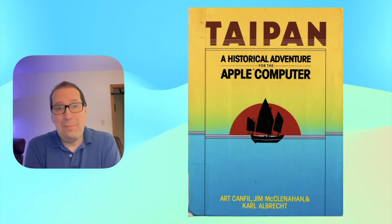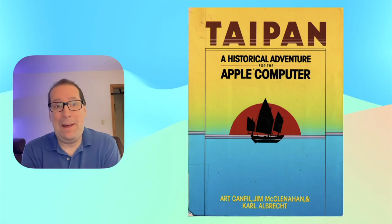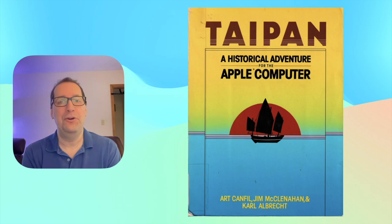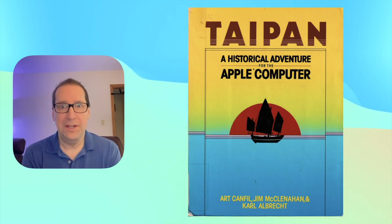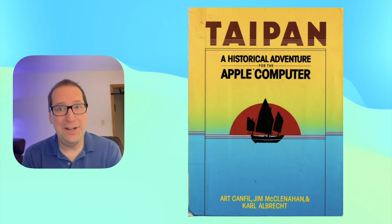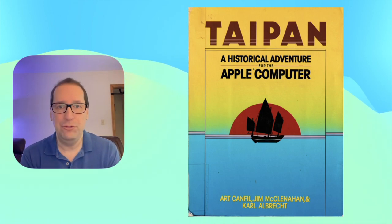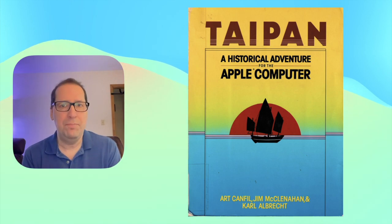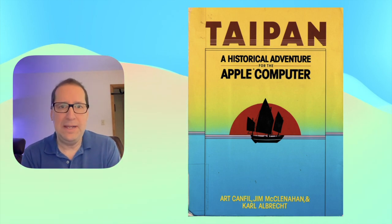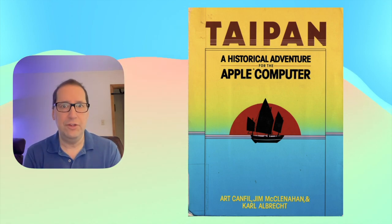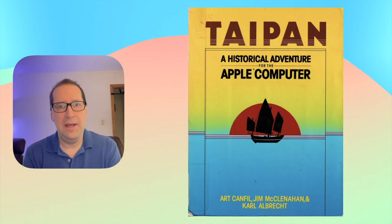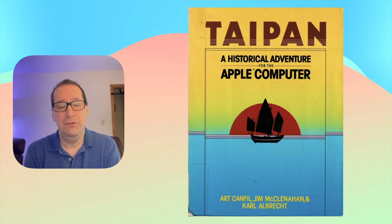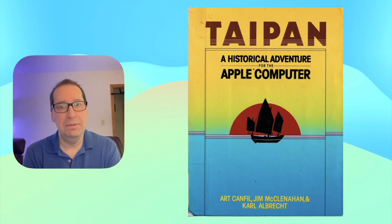Despite appearances, I'm not really here to talk about Taipan the game or about Taipan the book. I'm here to talk about Taipan the book of the game. Published in 1986, the full title is Taipan: A Historical Adventure for the Apple Computer. It's sort of a natural expansion of the idea of typing in game listings in magazines. In theory, you should be able to take the book, type in the Applesoft Basic to your Apple II, and end up with a fully functional version of Taipan to play, complete with graphics.